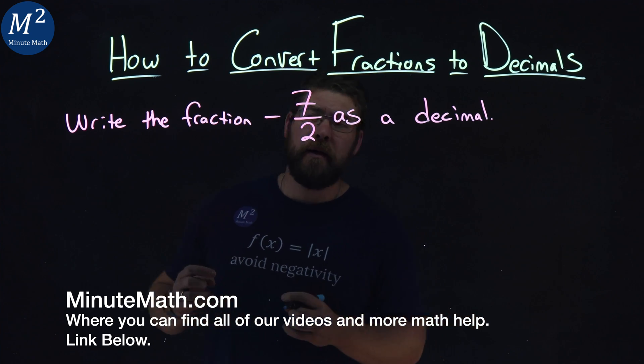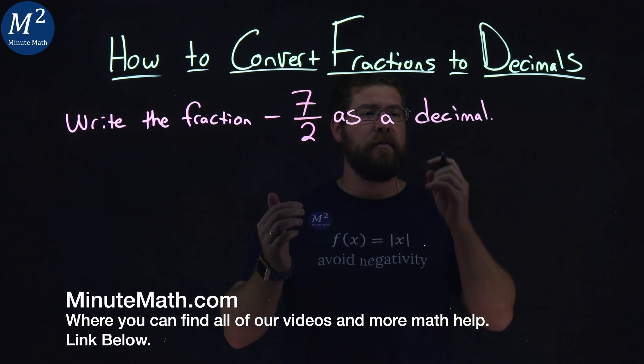We're given this problem right here. Write the fraction, negative 7 halves, as a decimal.